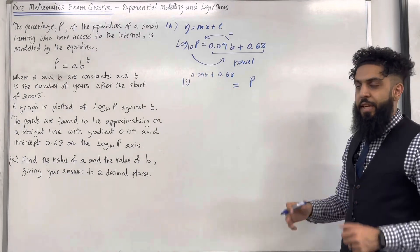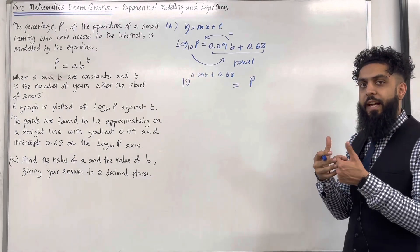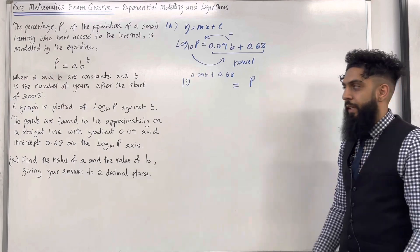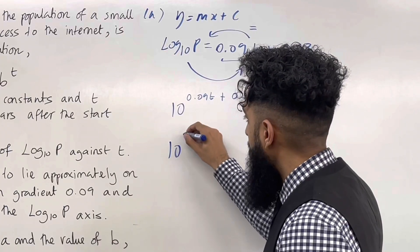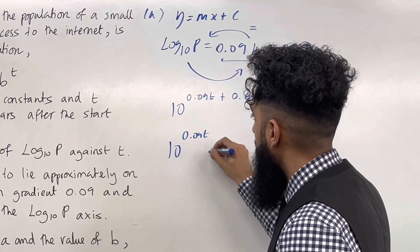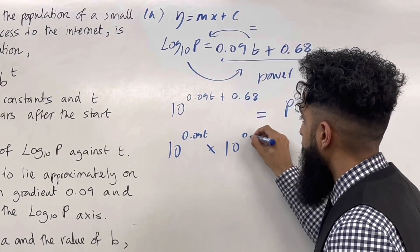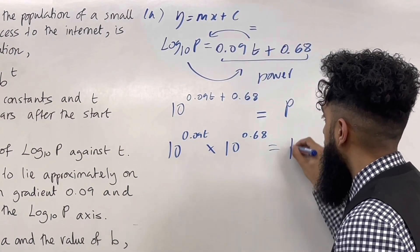So 10 to the power 0.09T plus 0.68 is equal to P. So ladies and gents, over here we are adding the powers, hence we can split it as a product of two terms with base 10. So I've got 10 to the power 0.09T multiplied by 10 to the power 0.68 equal P.